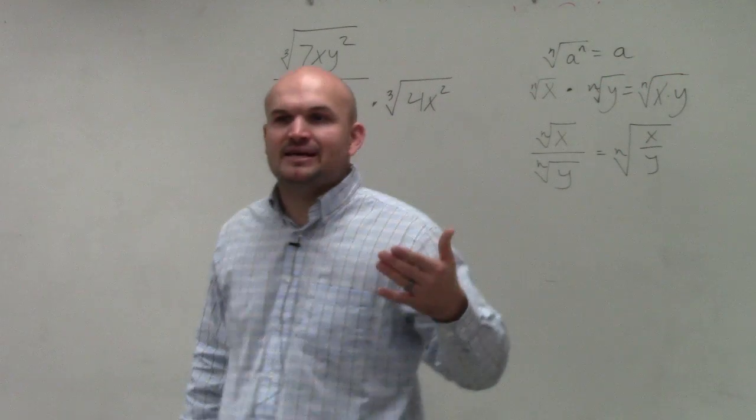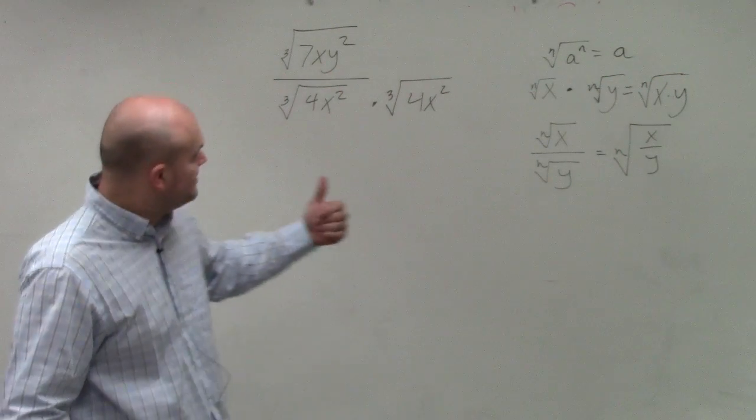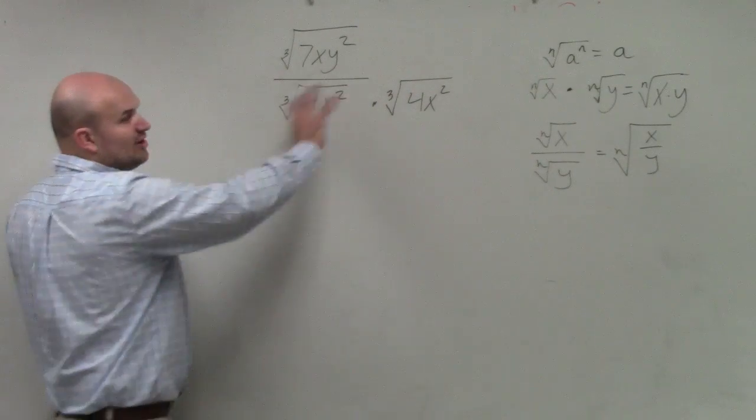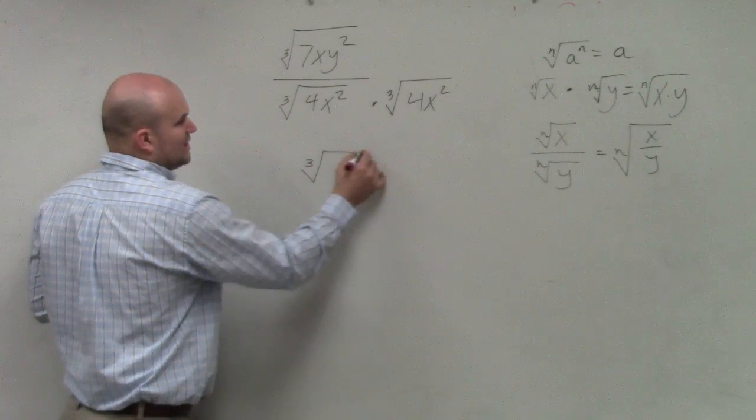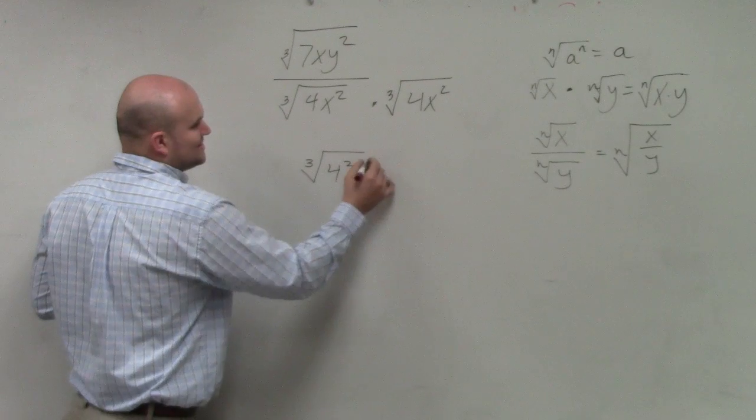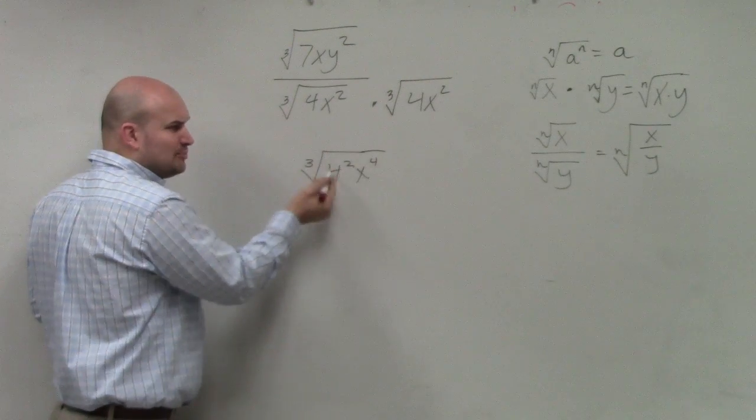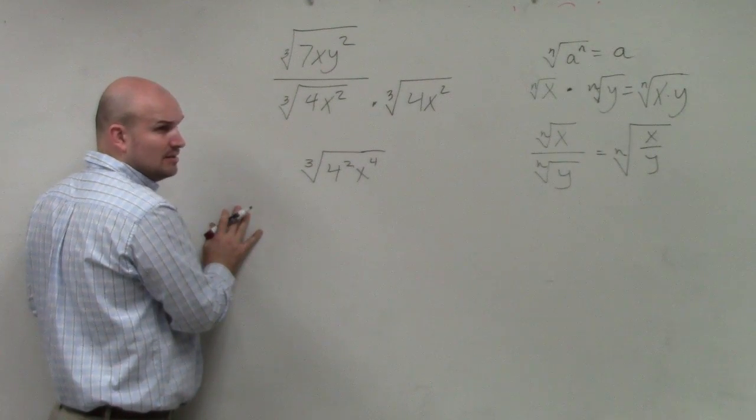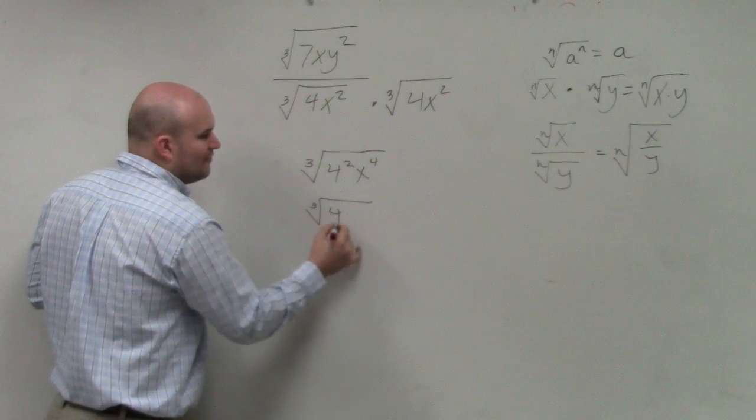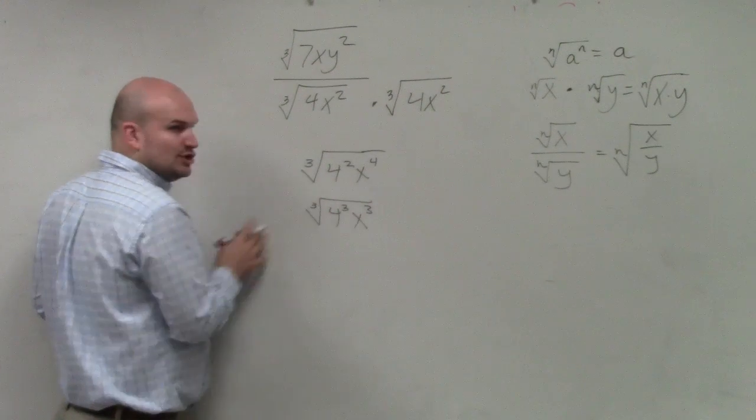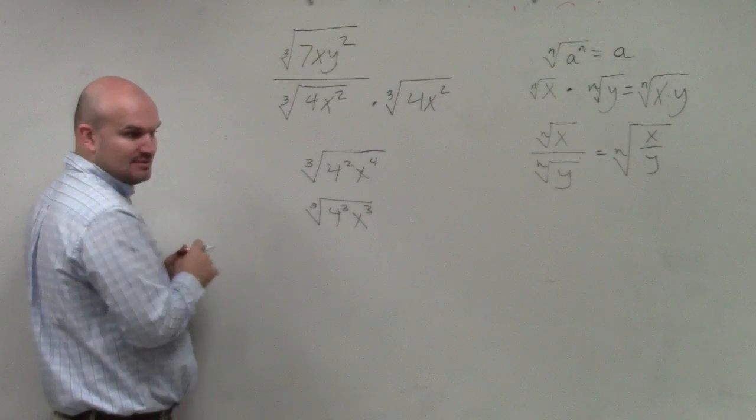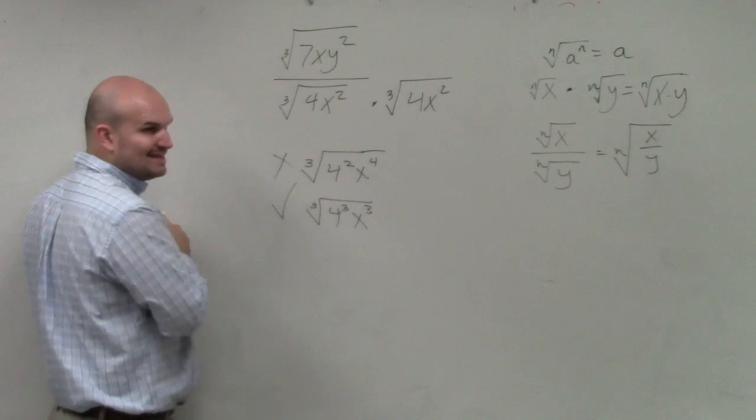But that's not the reason, Elijah, why we did that. If you guys notice, if I was to multiply these, I would get the cube root of 4 squared x to the fourth. Can I take the cube root of 4 squared x to the fourth? No. I need to get this to be the cube root of 4 cubed x cubed. That's what I want, right?